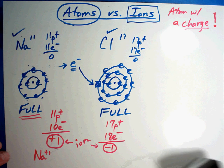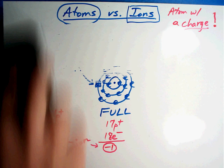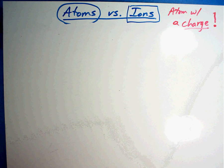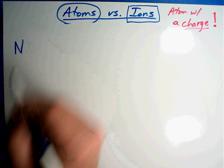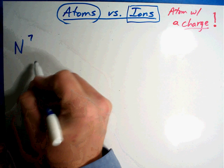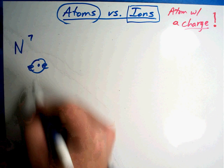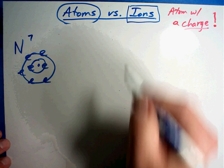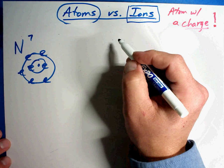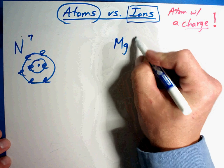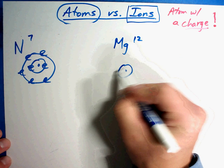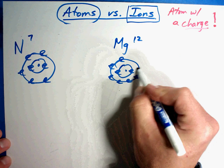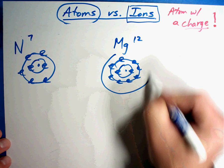Now what I want to do is show you a couple more just to make sure we've got it. We'll do this one just a little bit faster. Let's take something like nitrogen. Nitrogen is element 7. Two in the first, five in the outside. And let's also take somebody like magnesium, which is element number 12. Two in the first, then 8, then he needs two more.